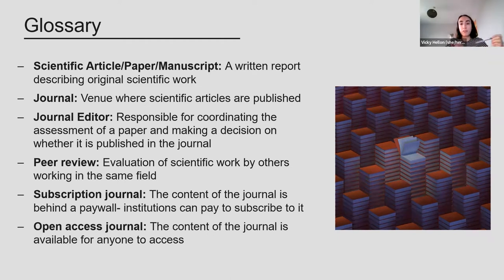With the traditional journal hierarchy, you'll have a chief editor at the top making strategic decisions, and then handling editors whose role varies by journal — they evaluate incoming papers, may desk reject them if they aren't good quality, send them out for peer review, and ultimately decide whether a paper is published. They may be employed directly by the journal or be active academics volunteering their time.